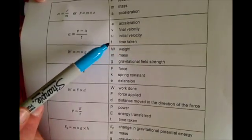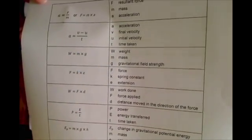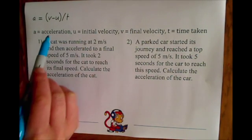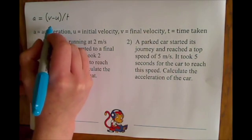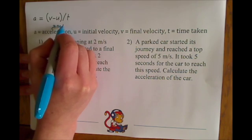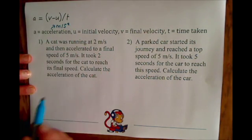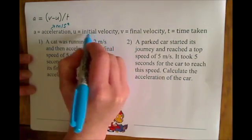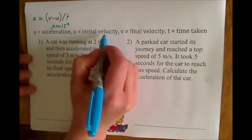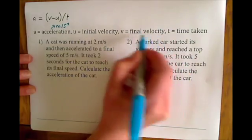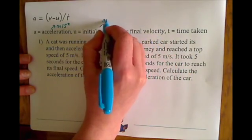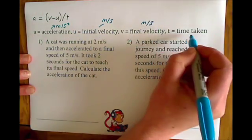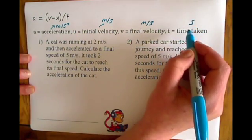What it doesn't tell you is the units for all of these, so we need to remember these off by heart. The units for acceleration are meters per second squared — that's what we measure acceleration in. Velocity, whether it's initial velocity or final velocity, is measured in meters per second, and time is measured in seconds.